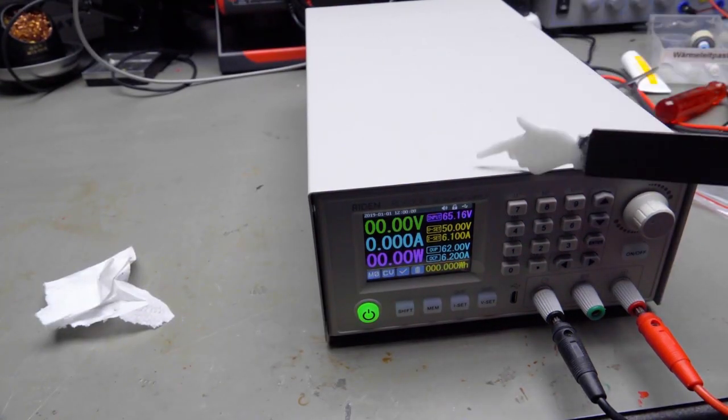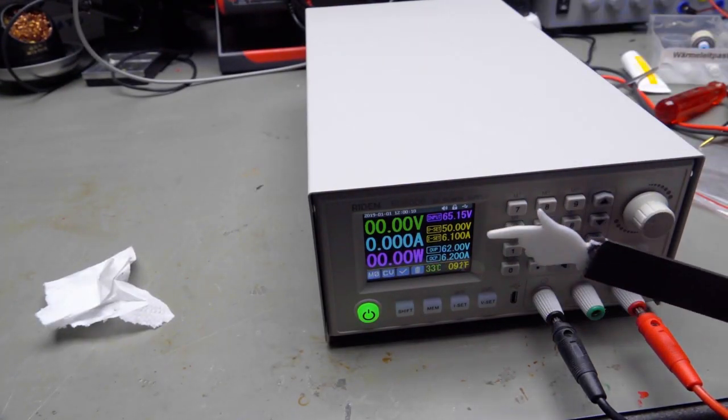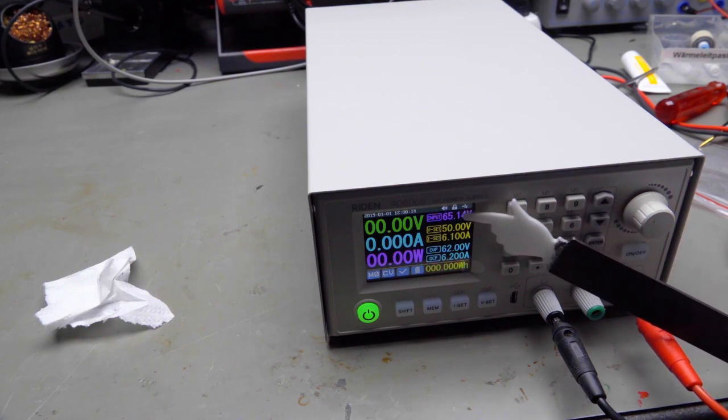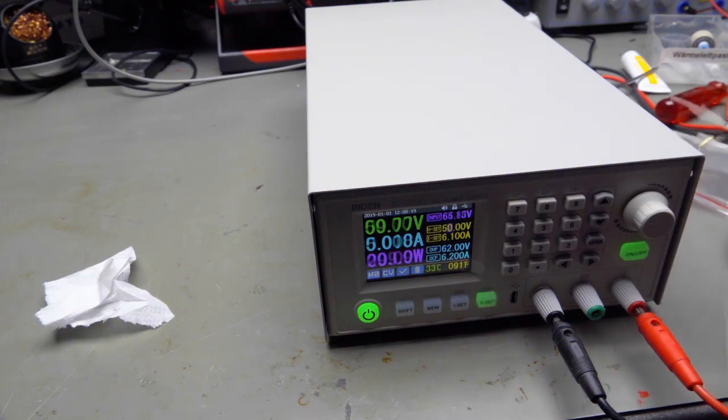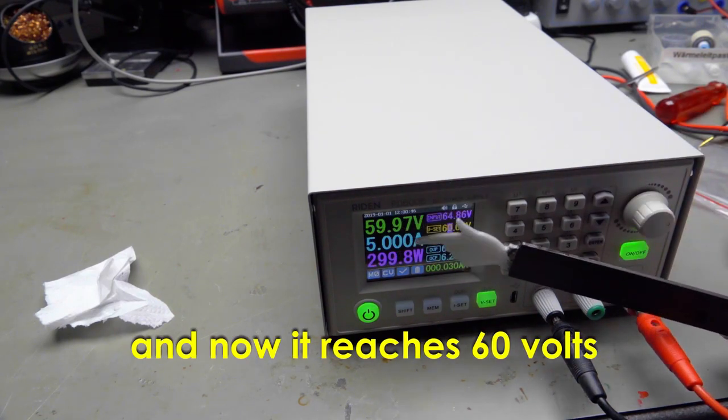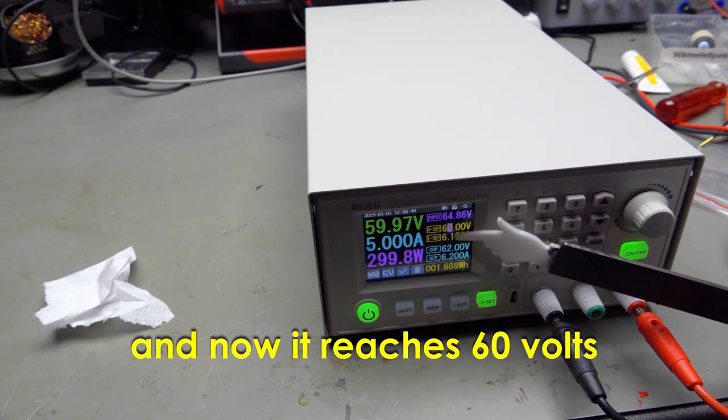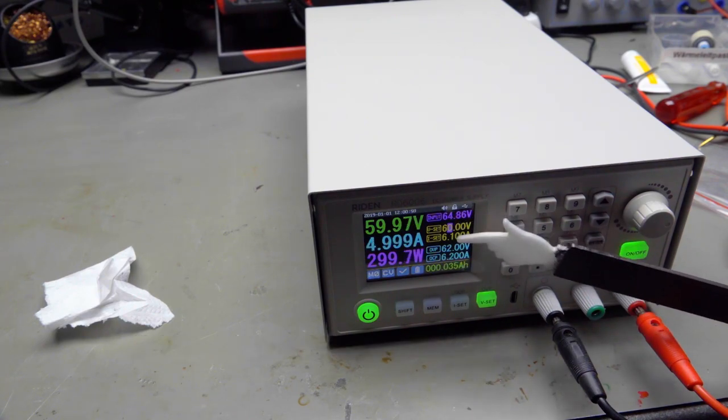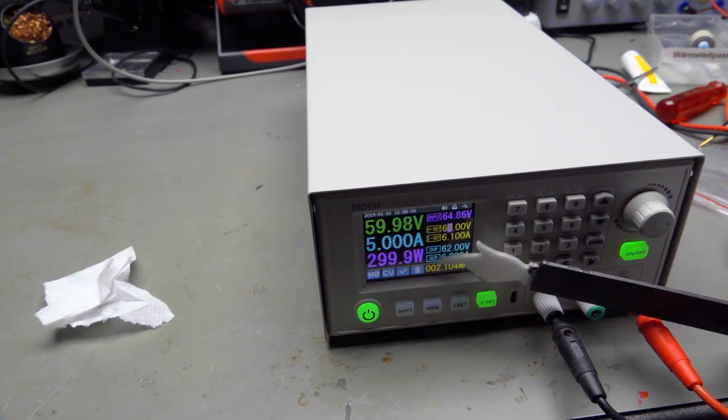Because the specification of the input voltage is 70 volt, I cranked up my internal power supply to 65 volts. 60 volt, 5 ampere. It's not 6 ampere, it's only 5 ampere. And 300 watt.